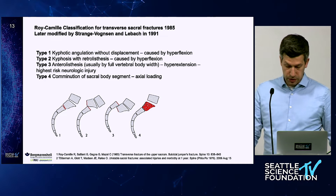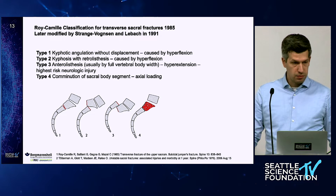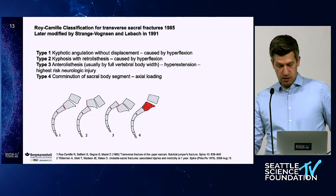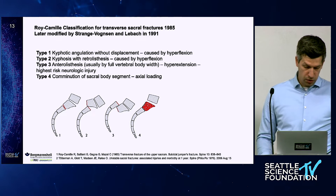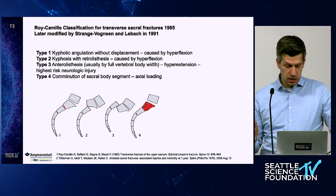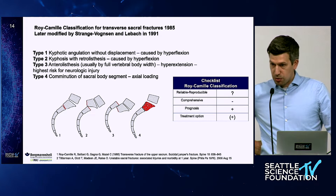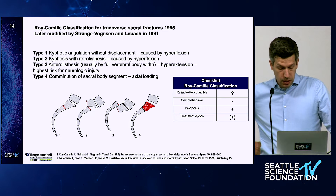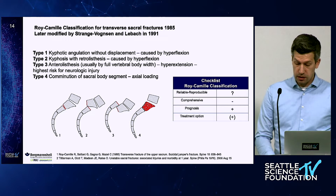Next is the Roy-Camille classification, which looks at the sagittal plane and describes four — or even five — types. Each type also indicates the probable mechanism of injury, including kyphotic angulation and comminution. However, there is no publication confirming its reliability, and it also covers only one plane. It is probably a good idea to combine the Roy-Camille and Dennis classification systems, as each provides complementary information.